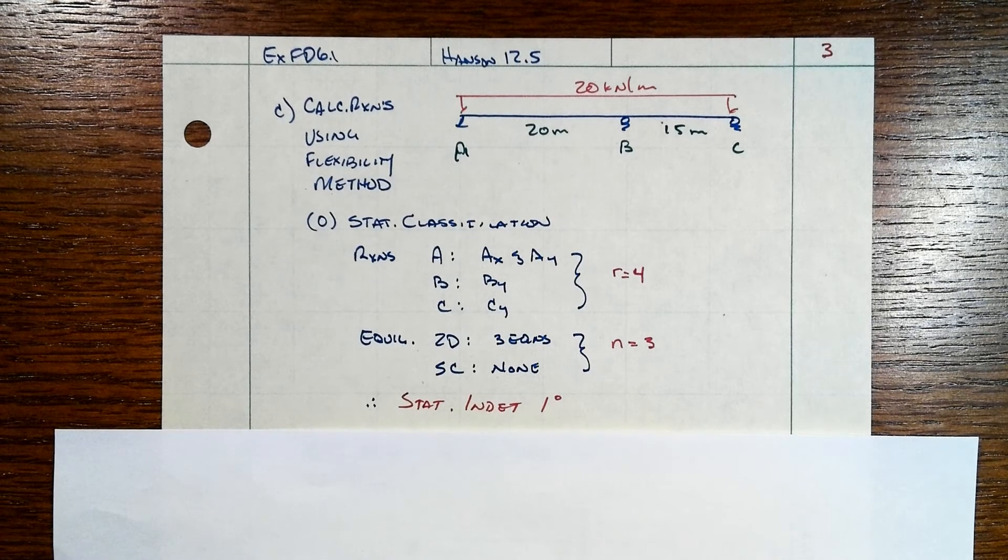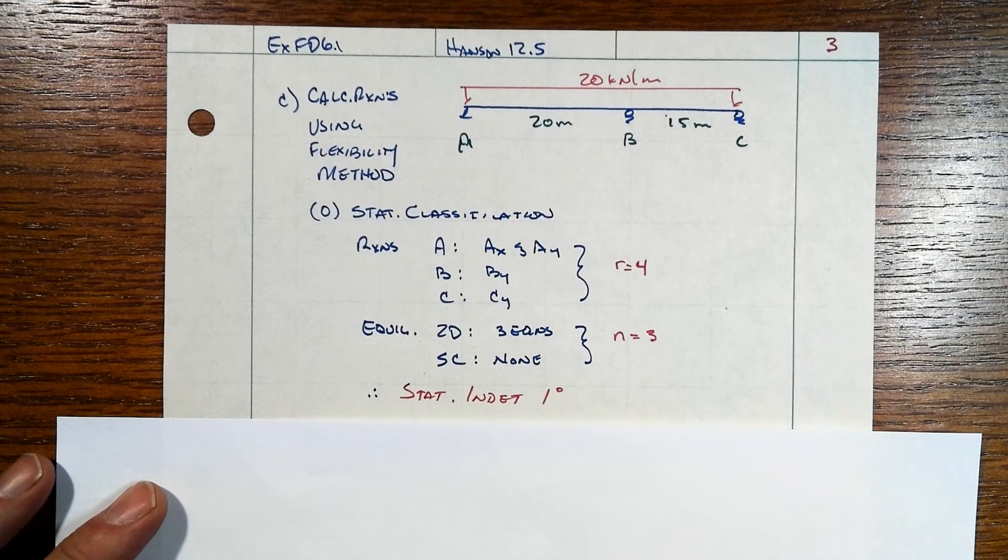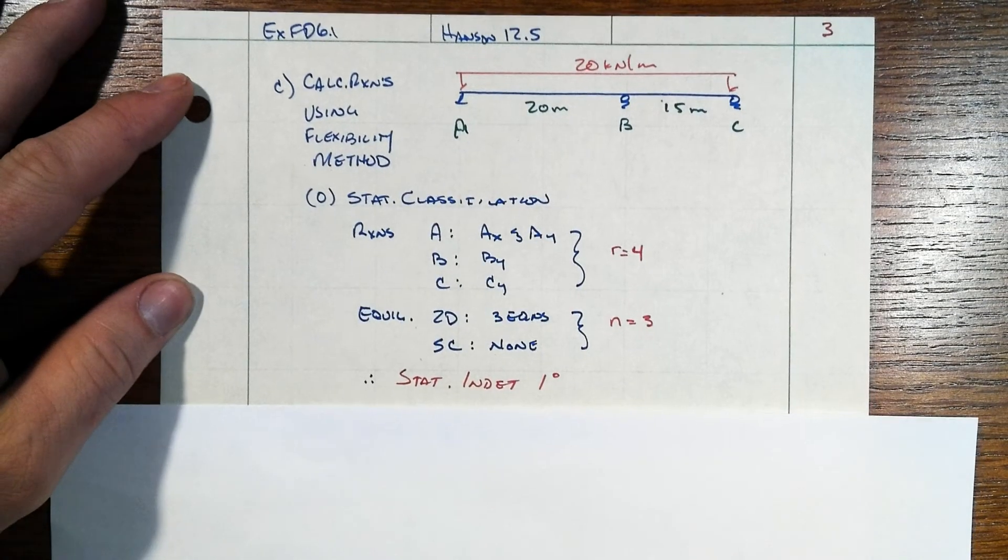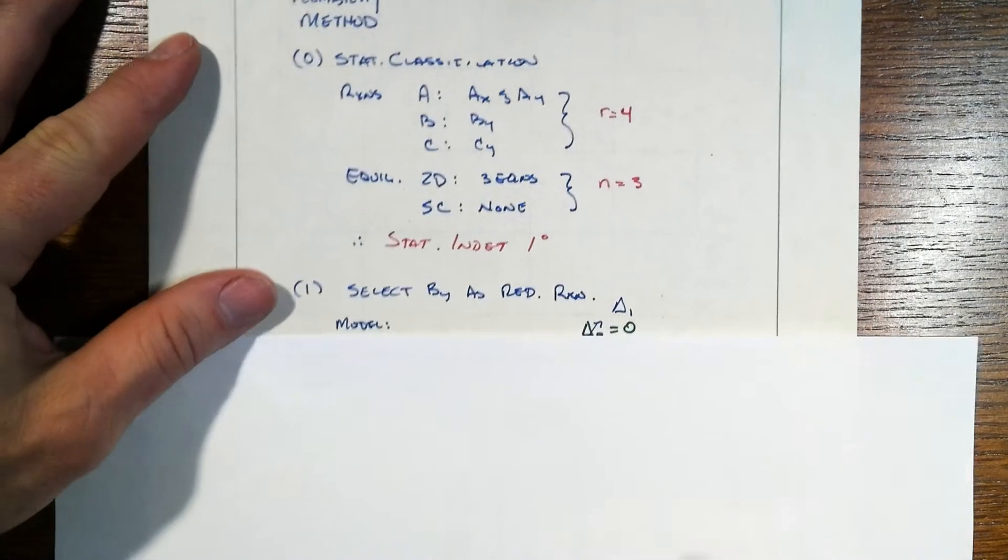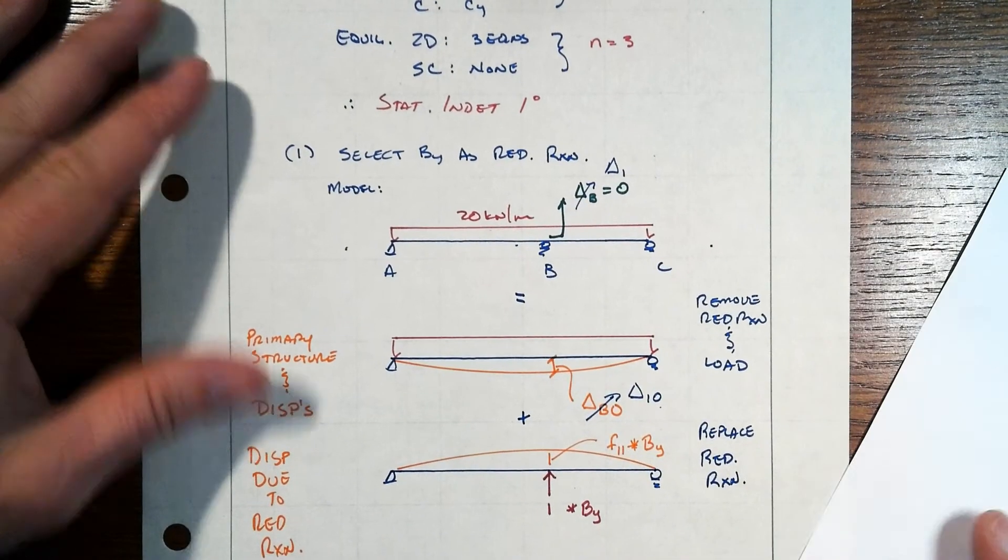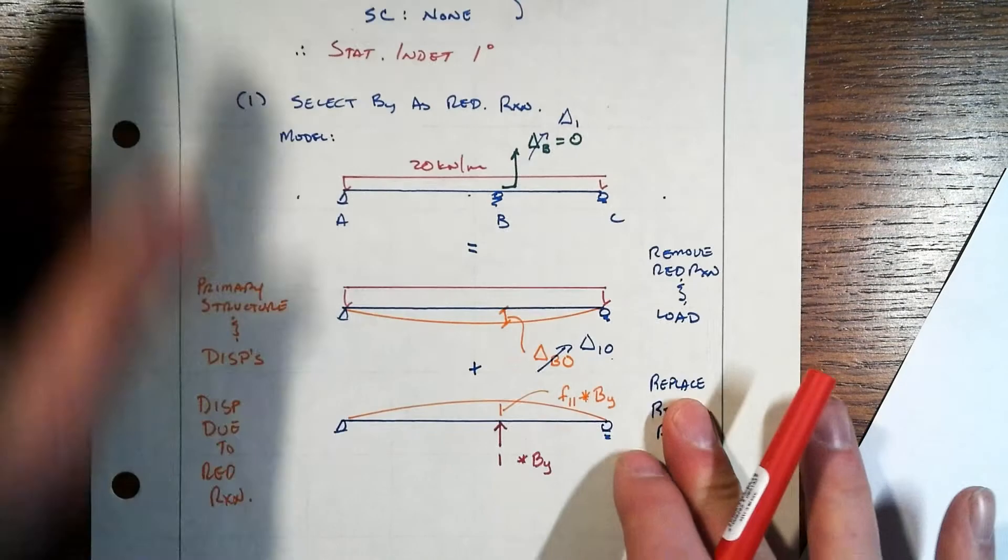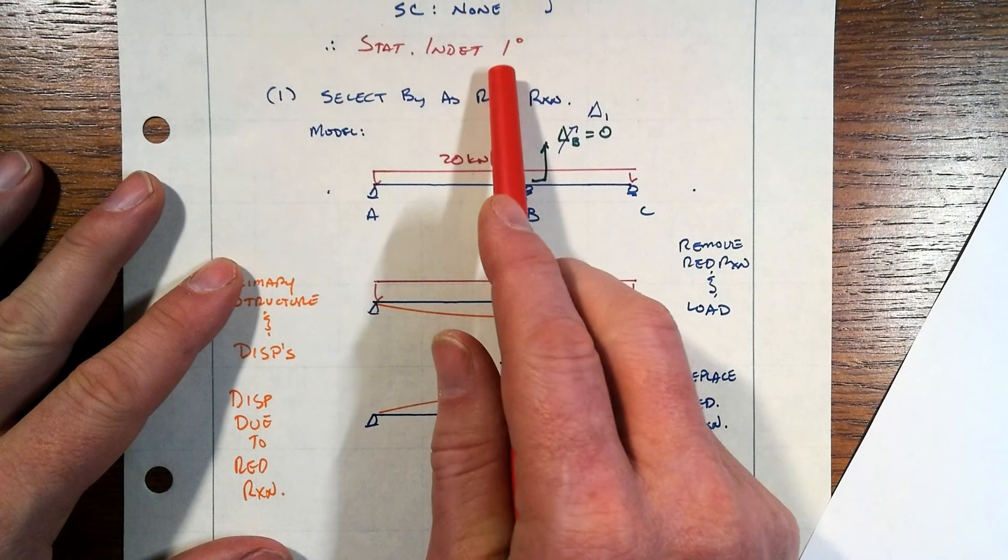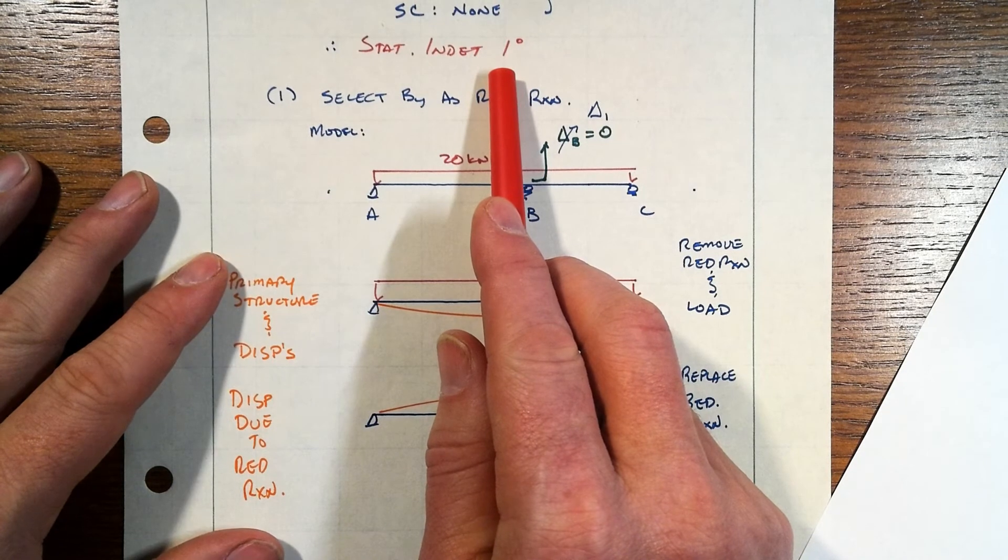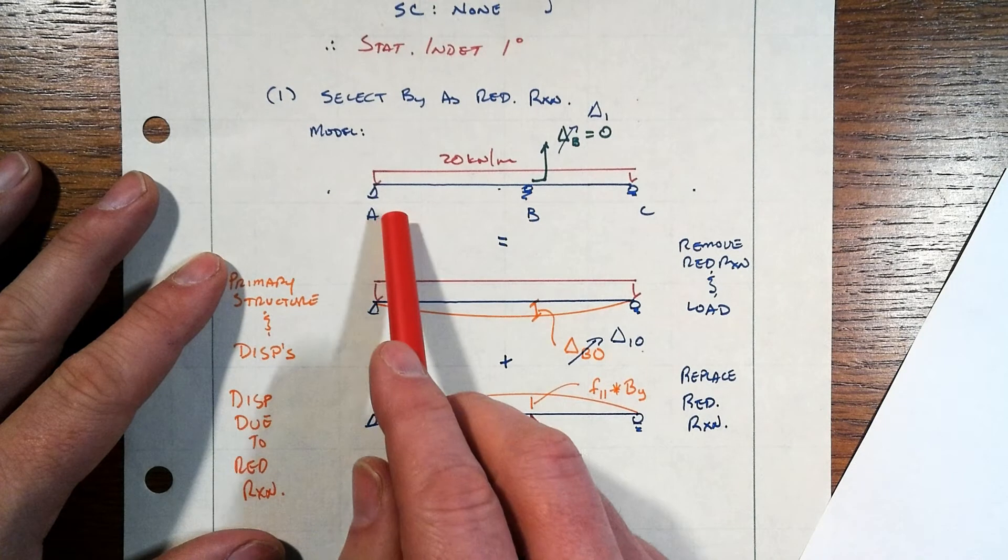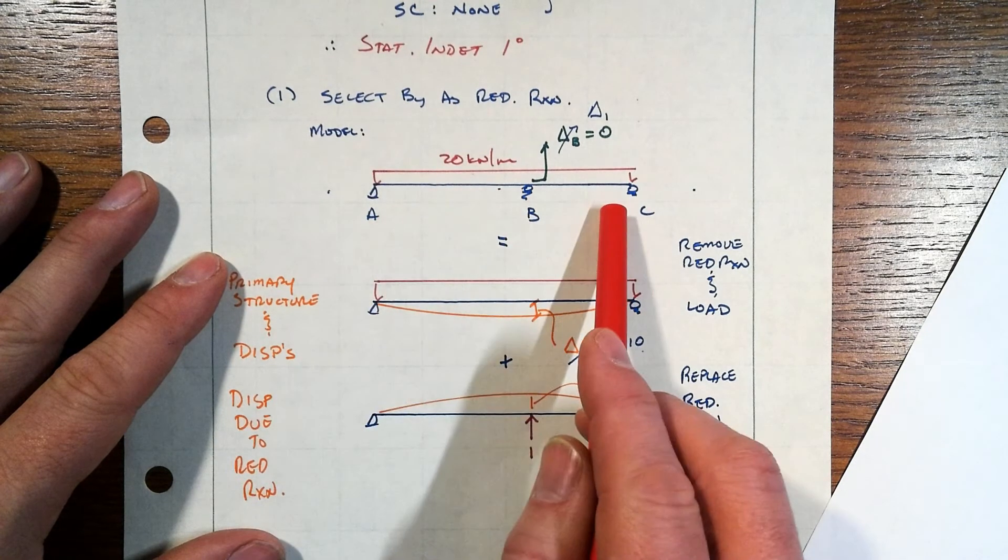So, statically indeterminate to the first degree. And now we've got to address this with something more complex than just simple equilibrium equations. And the way we do that, remember, is by taking one of those reaction components away. Right? So, oh, because we're statically indeterminate to the first degree, if we get rid of one, then we have a determinate system.